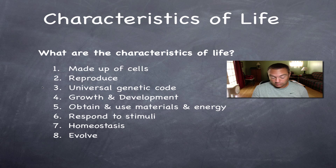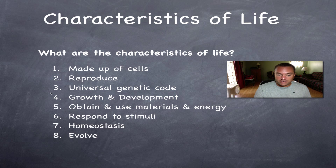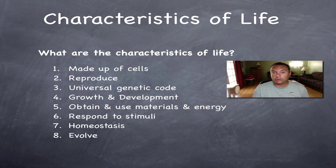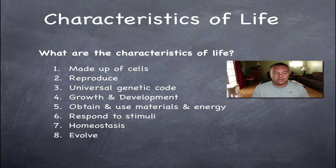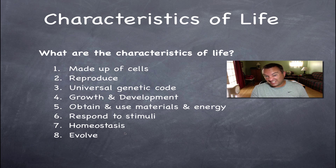Every living thing is made up of at least one cell. All living things know how to reproduce — they can make more of their own kind. All living things have a universal genetic code, which is DNA, and they also use RNA to help make their proteins. All living things will go through growth and development, and they will obtain and use materials and energy, which basically means they need to get food. All living things also know how to respond to stimuli.